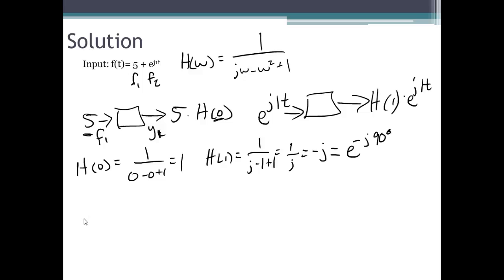So combining that with the superposition concept that we talked about, this output y of t will equal 5 times its frequency response, 1, plus e to the j1t times its frequency response, e to the negative j 90 degrees. This can be rewritten as 5 plus e to the j t minus 90 degrees.